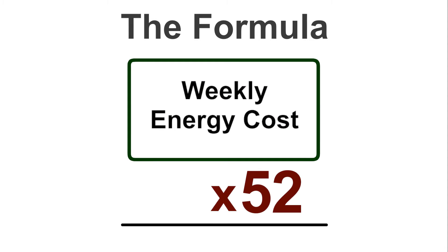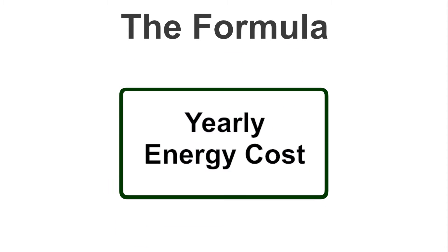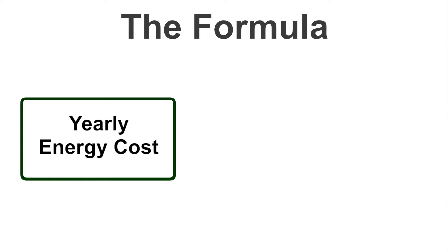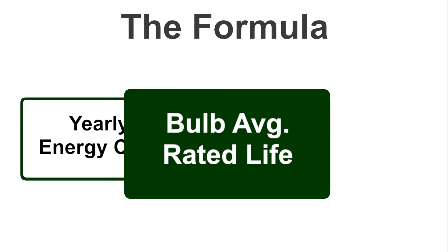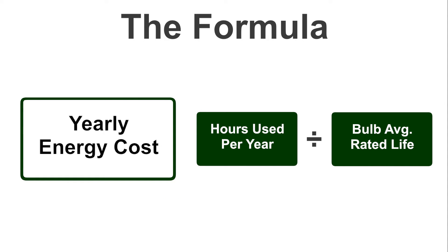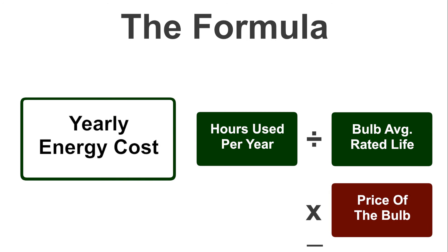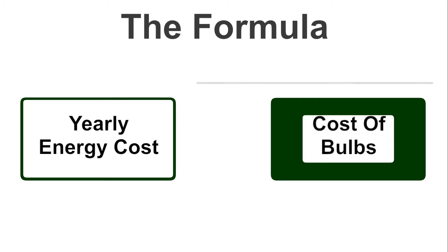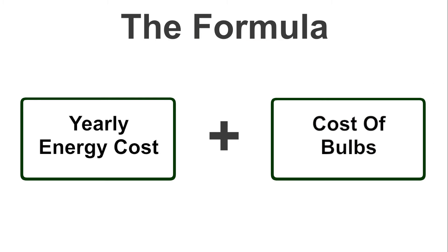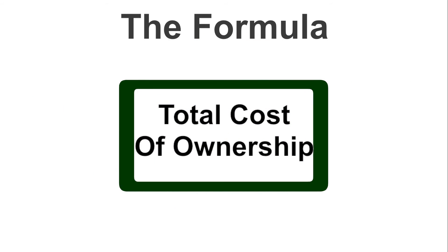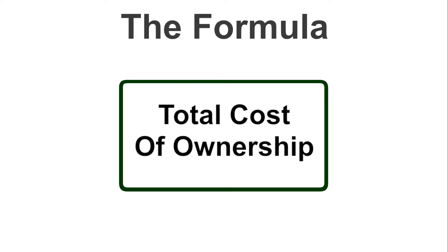Now multiply that by 52 for the yearly energy cost. Next, we need to figure out the actual purchase cost for the bulbs over time. For that, you will take the hours used per year and divide that by the average rated life of the bulb. This will tell you how many times you will change the bulb in a year. Multiply that number by the price of the bulb and you will have the cost of the bulb or bulbs. Add this to the yearly energy cost and you will have your total cost of ownership.